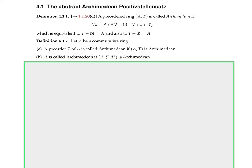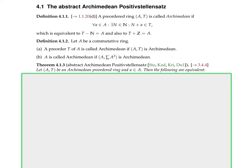A pre-order ring (A,T) is called Archimedean if T is Archimedean; a commutative ring A is called Archimedean if A together with sums of squares — which is the smallest pre-order of A — is Archimedean. This abstract Archimedean Positivstellensatz was probably known already to Stone in the 1940s, and to Kadison in the 50s, Krivine in the 60s, and Dubois also in the 60s.